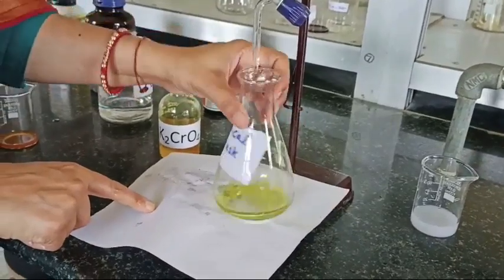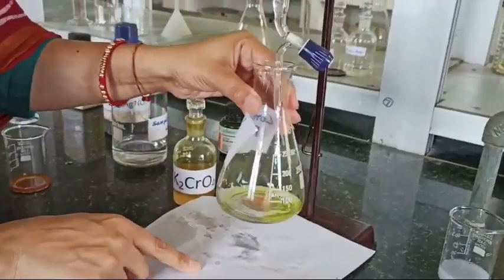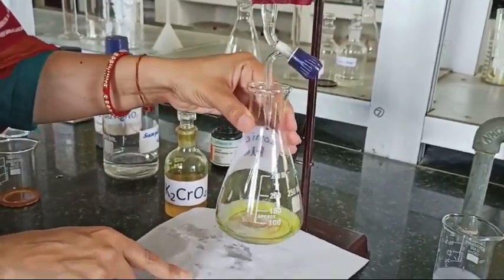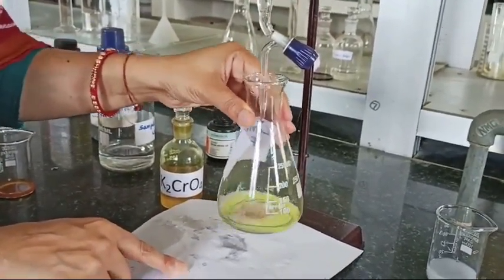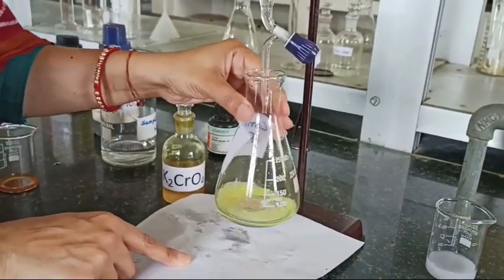Now we will do the same experiment in the presence of indicator. You can see the color. This color is of K2CrO4 will react with the AgNO3 and it forms AgCrO4.